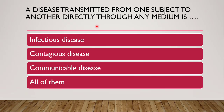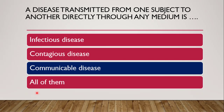Next question: a disease transmitted from one subject to another directly or through any medium. The correct answer is communicable disease, because communicable diseases are transmitted from one subject to another either by direct contact or through any medium like air, food, dust, or water.